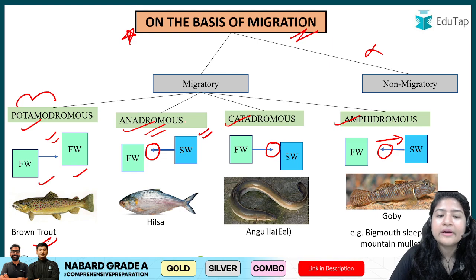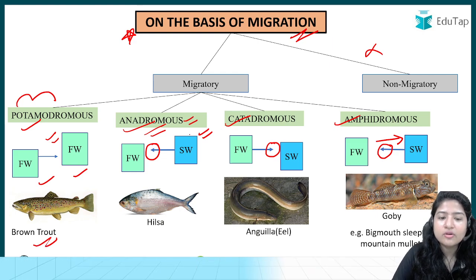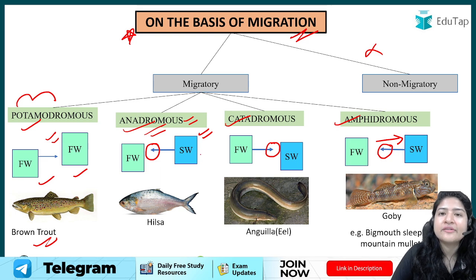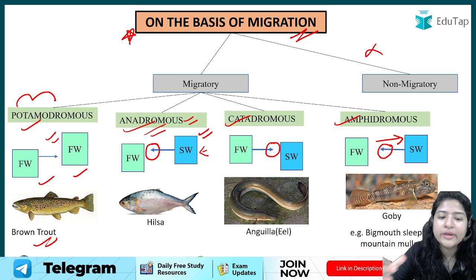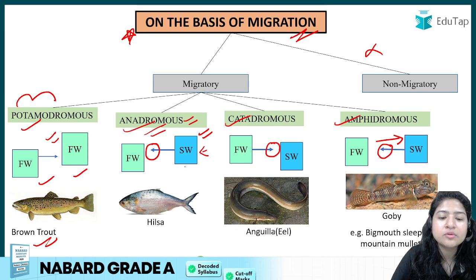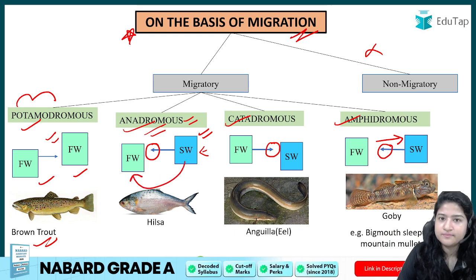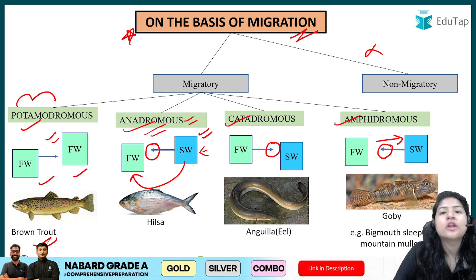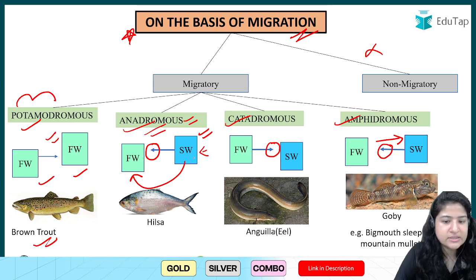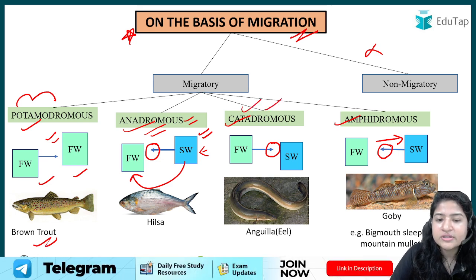Anadromous fishes spend their juvenile and growing period in sea water, but when it is time to lay eggs they migrate to fresh water. So anadromous fishes are those that move from sea water to fresh water for laying eggs. Examples include salmon.